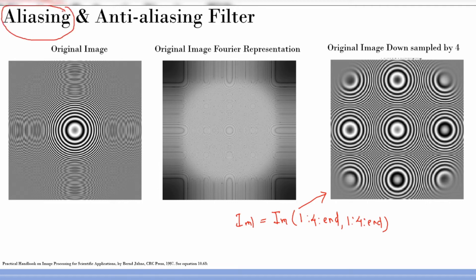Aliasing is really understood with the help of a Fourier transform. If you are coming from a signal processing background you are already aware of this property in 1D signals, and you just need to extend that to 2D signals.